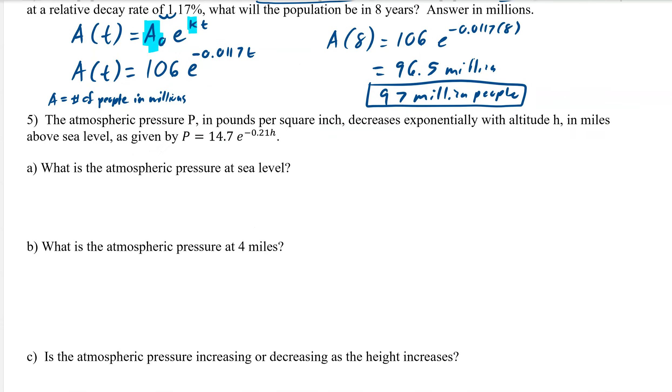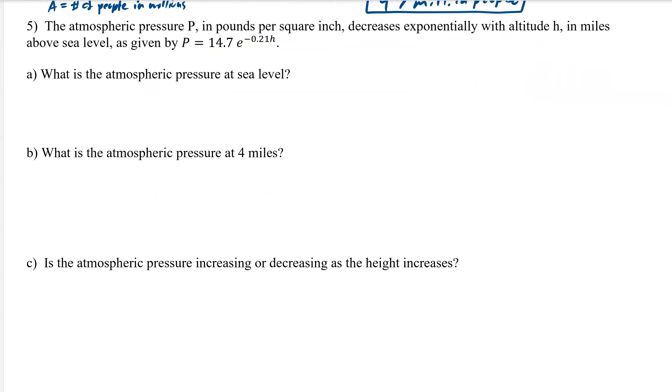So it says the atmospheric pressure p in pounds per square inch decreases exponentially with altitude h. So again, let's write these things down. h is our altitude, and it's in miles. p is our pressure, and pounds per square inch. So it says, what is the atmospheric pressure at sea level? Well, sea level is zero miles high. That's what that means.